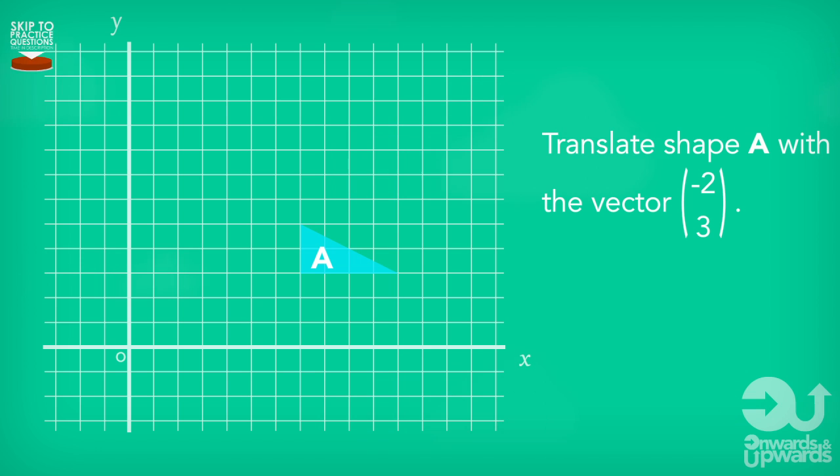So if we have shape A, we might be asked to draw where shape A would be if we translate it with the vector minus two, three. So one good quick way of doing these questions is to pick a single point on our shape like this, and we're going to use this as our starting point.